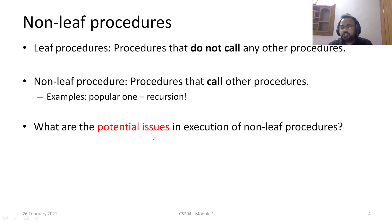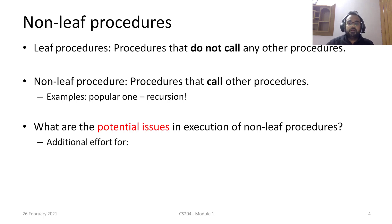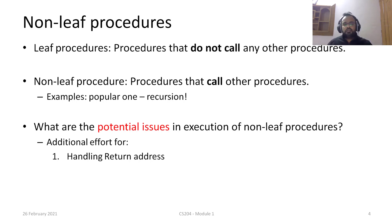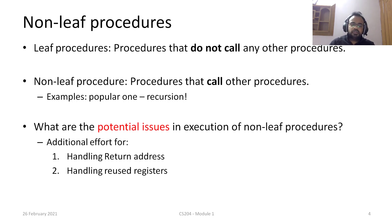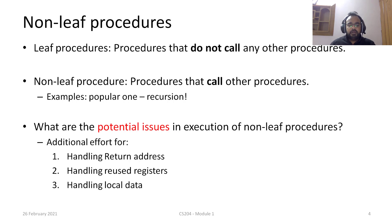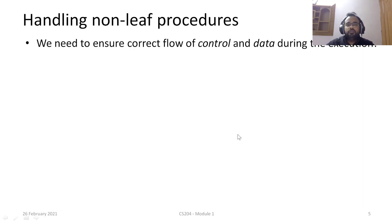For non-leaf procedures, what are the additional issues we need to handle compared with leaf procedures? We need to handle the return address — when we jump from procedure one to procedure two, there will be a new return address, so what happens to the previous one? We also have only 31 registers, so what happens to registers that need to be reused in both procedures? And what happens to local data or local variables within procedure one? We need to ensure correct flow of both control and data.